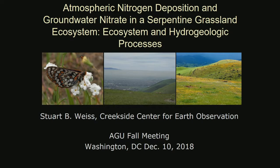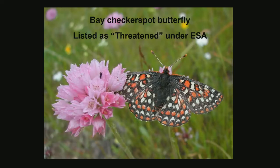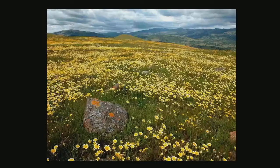Now I'm going to launch into my talk about looking at groundwater nitrogen nitrate in a serpentine grassland ecosystem. It starts with the butterfly. The Bay checkerspot butterfly is listed as threatened under the Endangered Species Act. It lives in this gorgeous flower-filled habitat grown on serpentine rock with very nutrient-poor soils. The flower diversity includes the host plants and nectar sources for the butterfly.